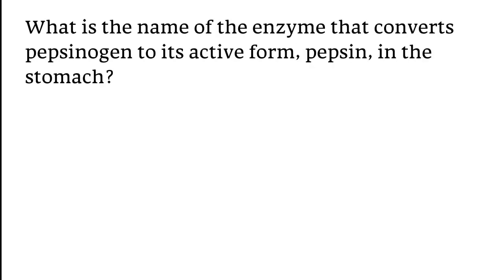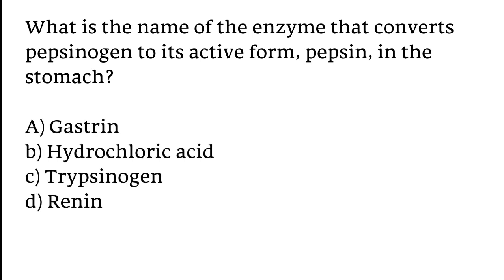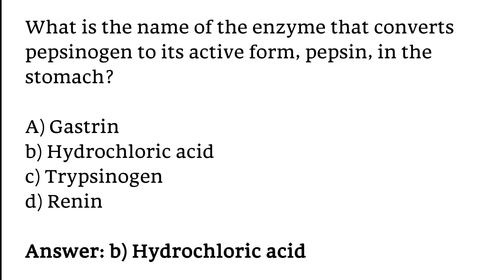What is the name of the enzyme that converts pepsinogen to its active form pepsin in the stomach? Gastrin, hydrochloric acid, trypsinogen, renin? The correct answer is option B. Hydrochloric acid converts pepsinogen to its active form pepsin in the stomach.